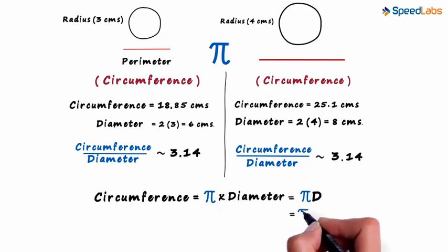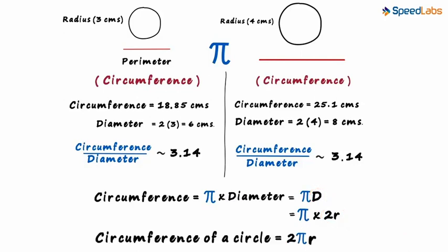Which can also be written as pi multiplied by 2R. Because the diameter is twice the radius. So the circumference of a circle is written as 2 pi R. All we did was write this product a bit differently.